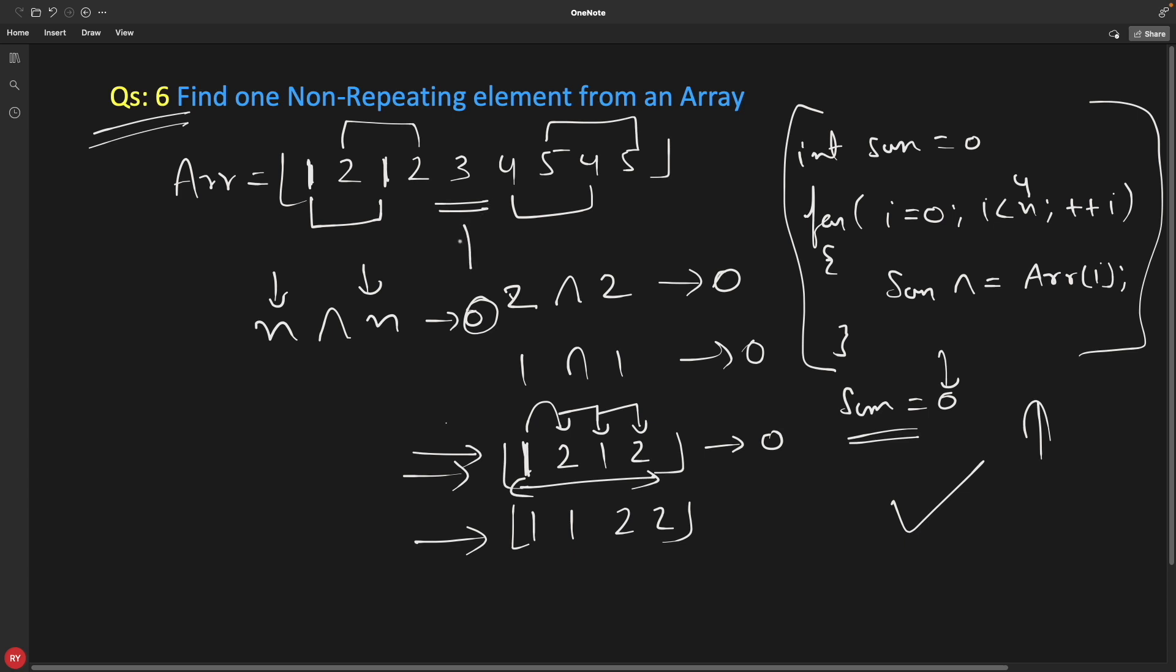Let's suppose we have 3 here. If we have 3 here and we are processing this, then sum would contain 3 in the end because the whole idea is all these pairs will get to 0, and ultimately you are doing XOR 0 with 3 because 3 is present.